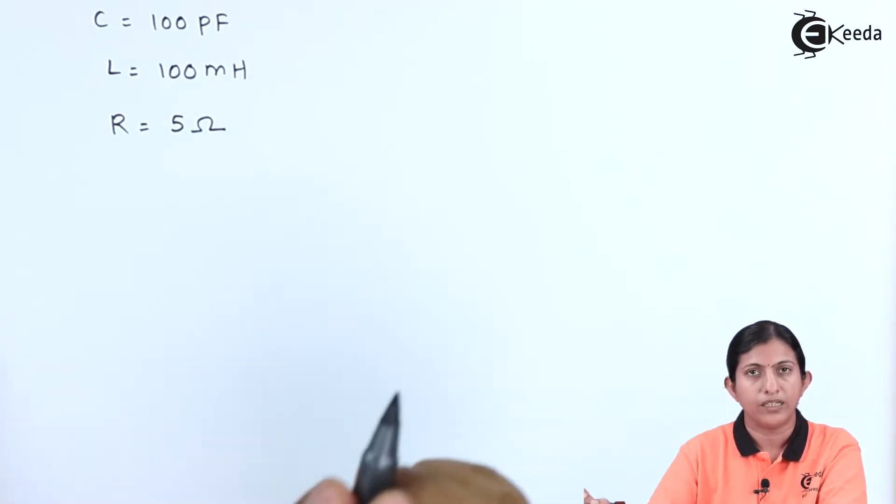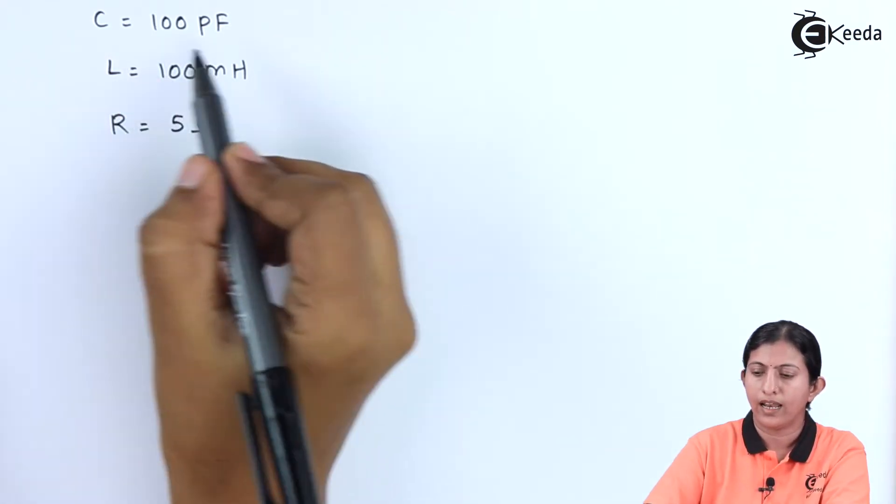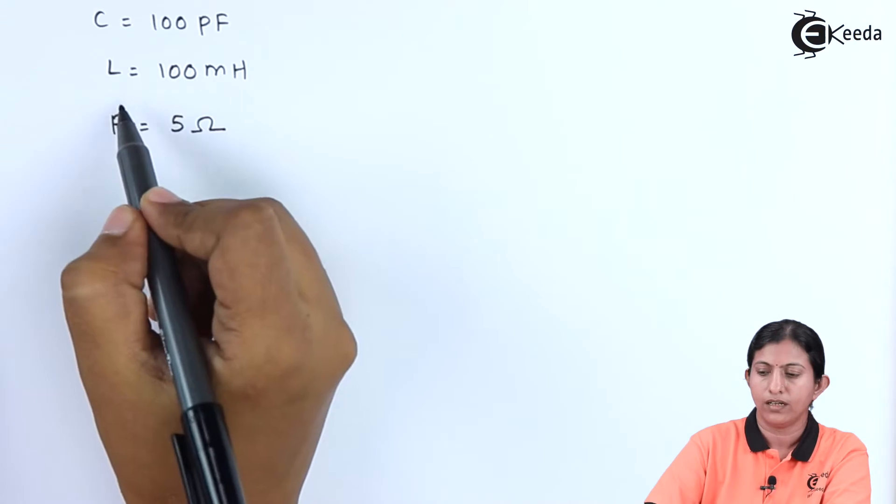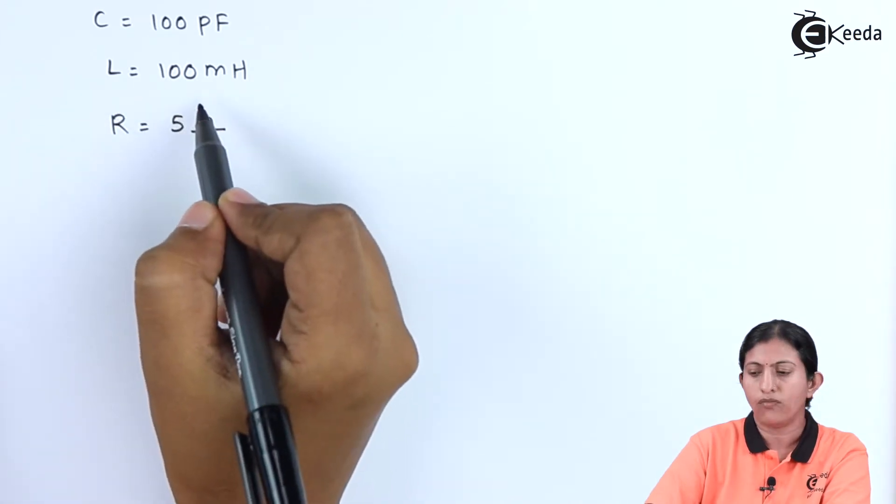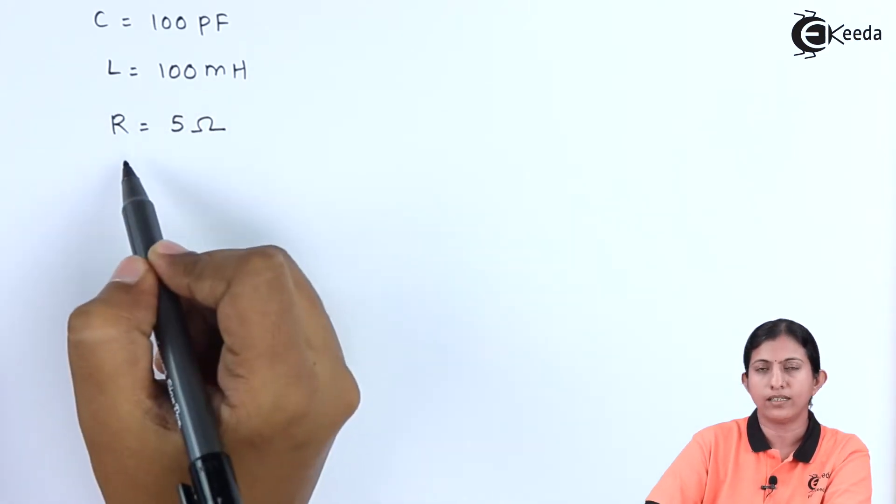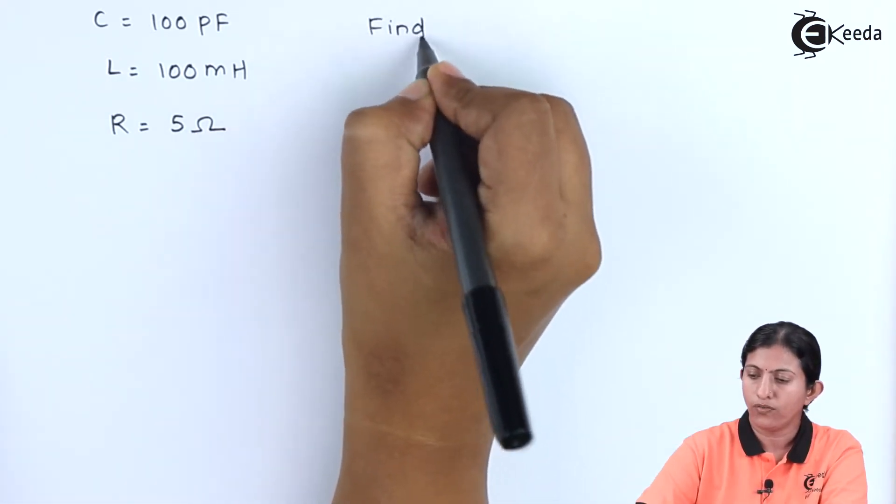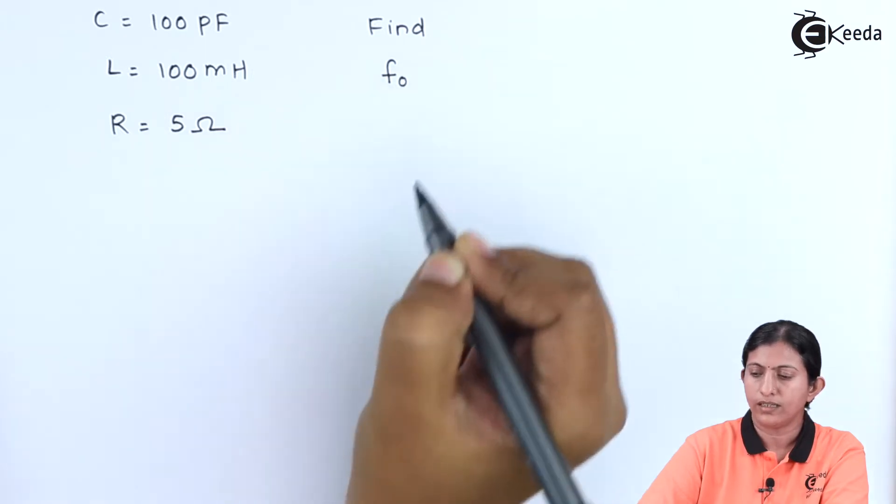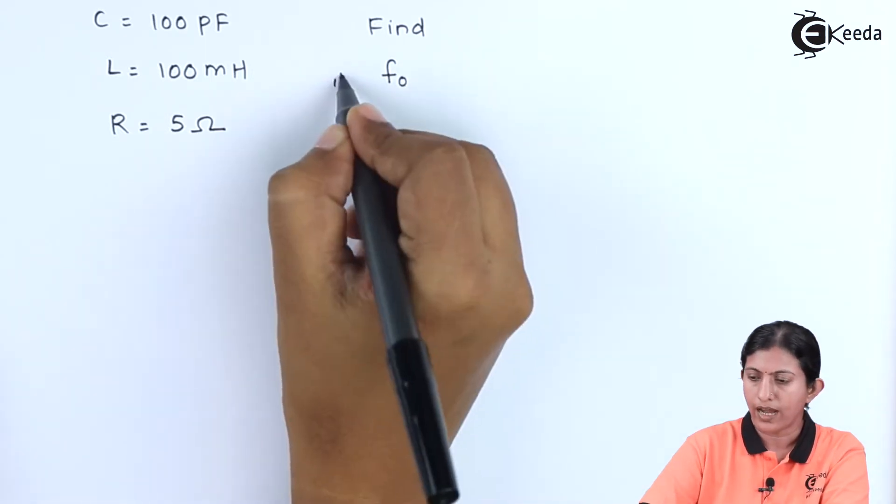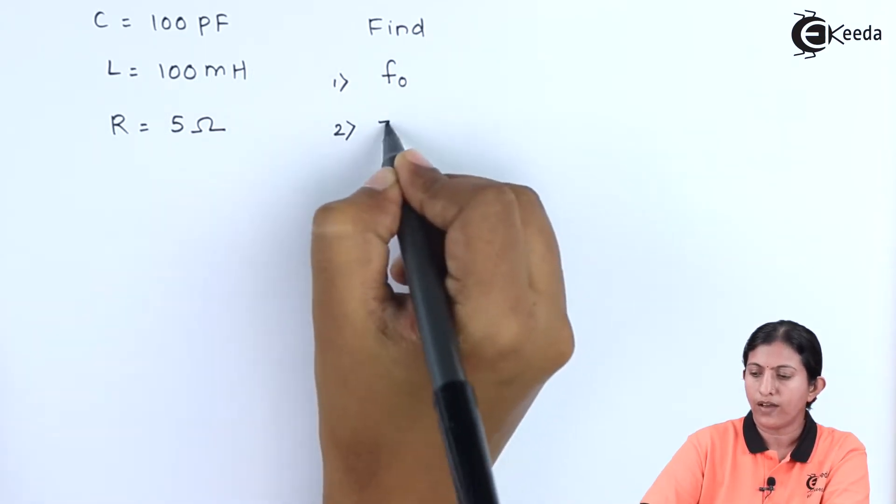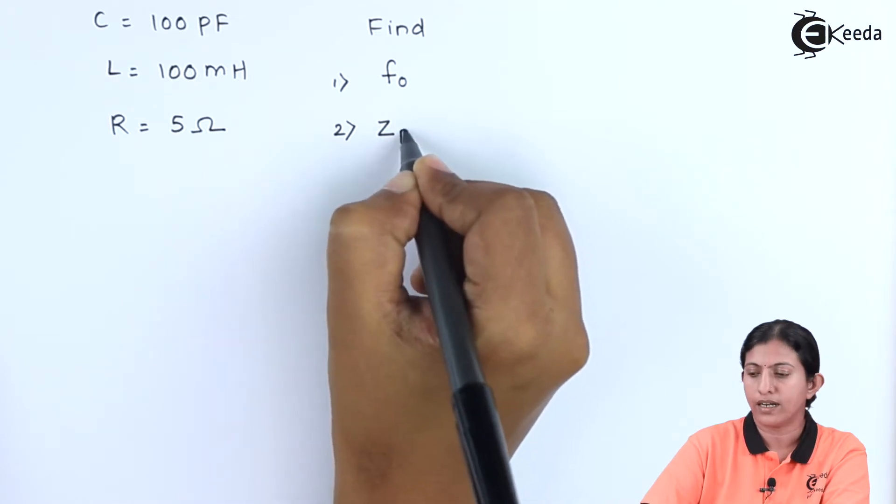Here the parameters given are C = 100 pF, L = 100 mH, and R = 5 ohm. We have to find out the value of resonant frequency f₀ and the impedance Zp.